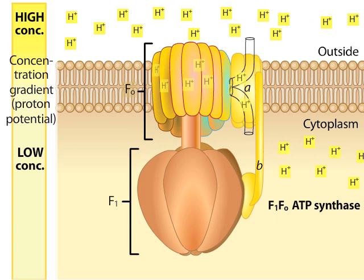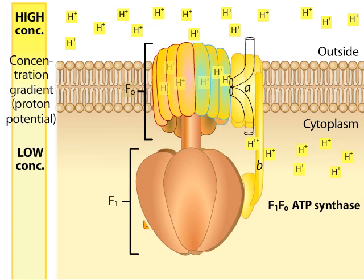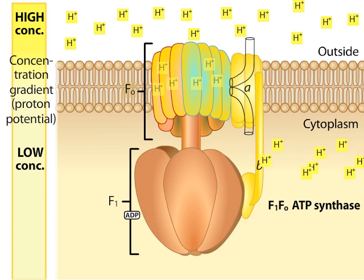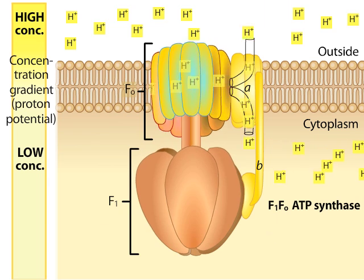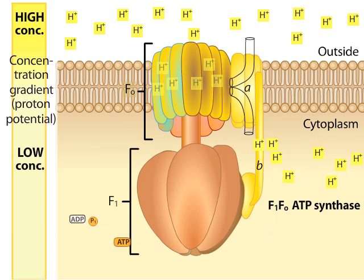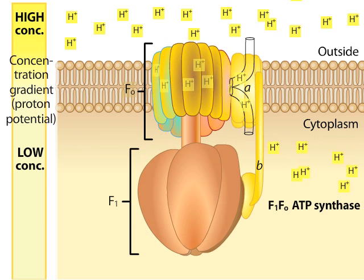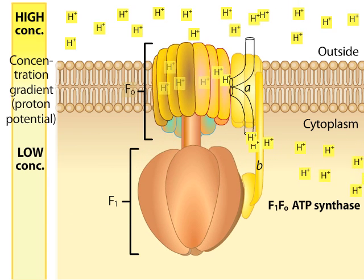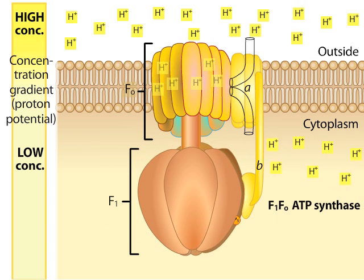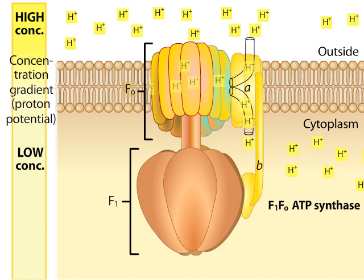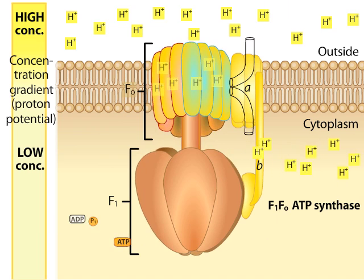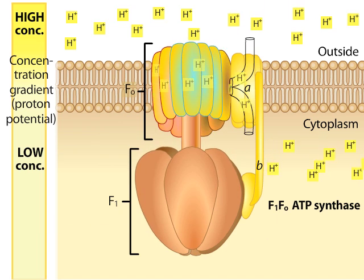ATP synthase complexes with the same general structure can be found in the cell membranes of bacteria, in the intermembranes of mitochondria, and in the thylakoid membranes of chloroplasts.